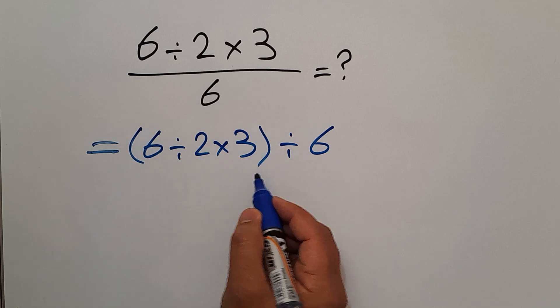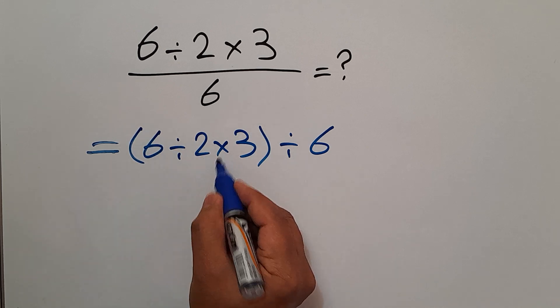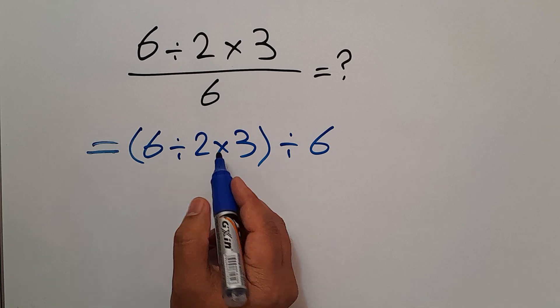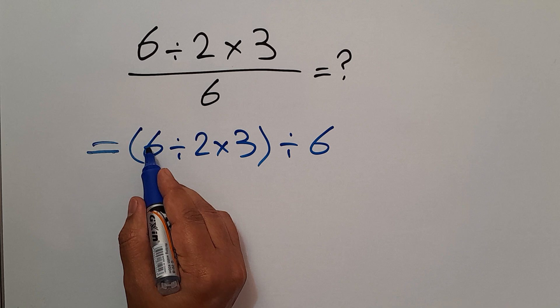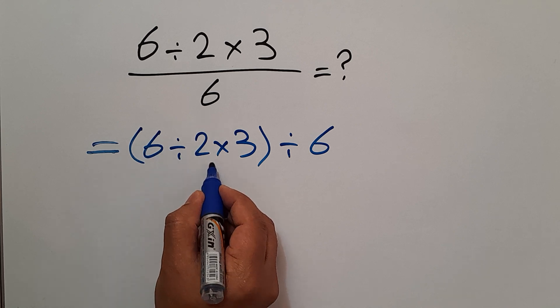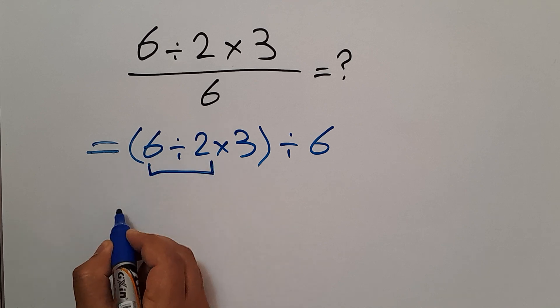we do these parentheses. And inside these parentheses we have this division and this multiplication. Division and multiplication have equal priority and we have to work from left to right. So first, 6 divided by 2 which equals 3, so